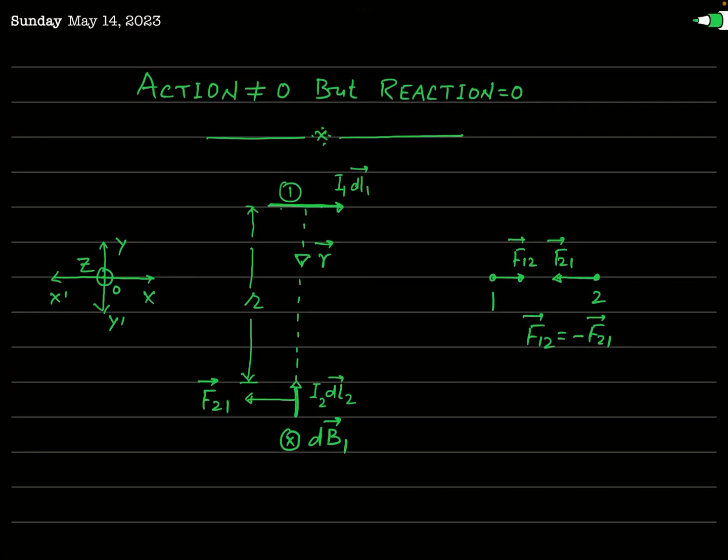In accordance with Newton's third law of motion, action is equal and opposite to reaction — the magnitude of action and reaction are the same but their directions are opposite. This law also states that action and reaction act instantaneously, with no time lag. However, we are going to see a very important example involving magnetic force where this law is not valid — there will be action but no reaction.